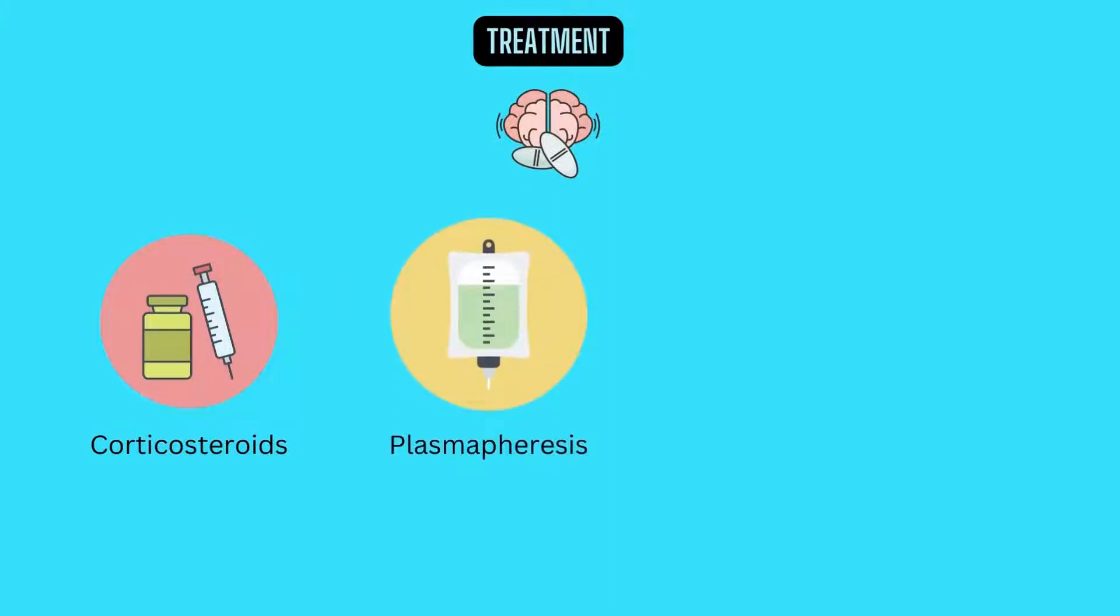Next, plasmapheresis. The liquid portion of part of your blood, plasma, is removed and separated from your blood cells. The blood cells are then mixed with a protein solution, albumin, and put back into your body. Plasma exchange may be used if your symptoms are new, severe, and haven't responded to steroids.